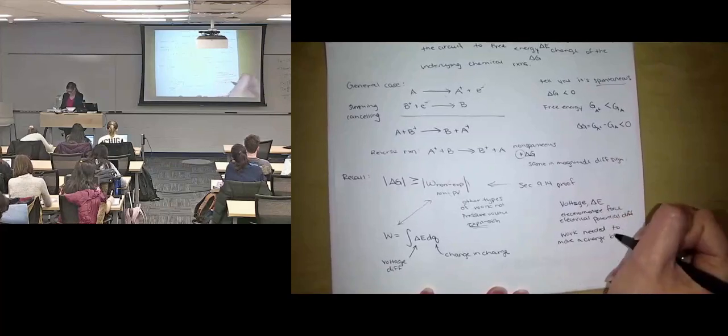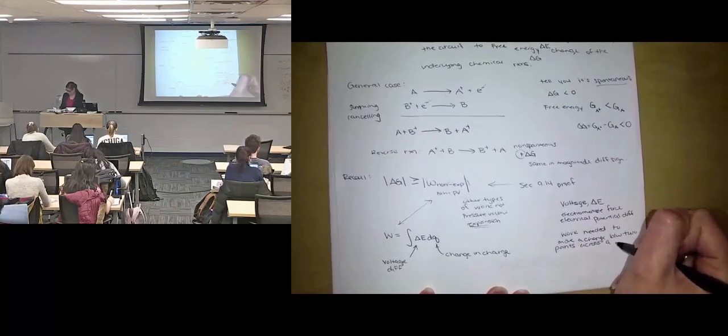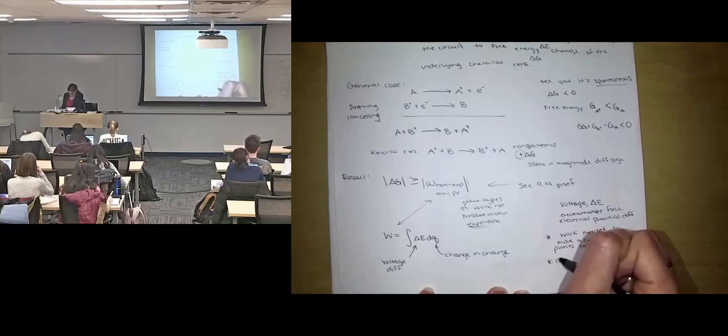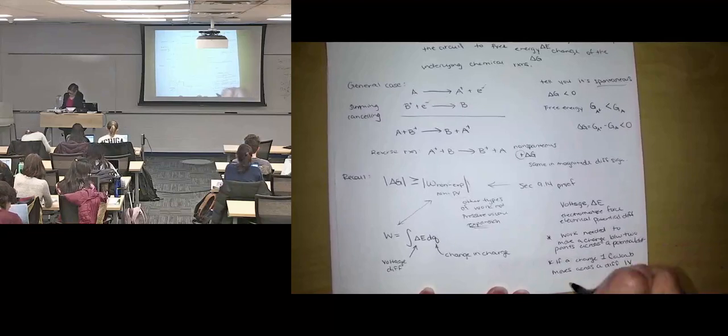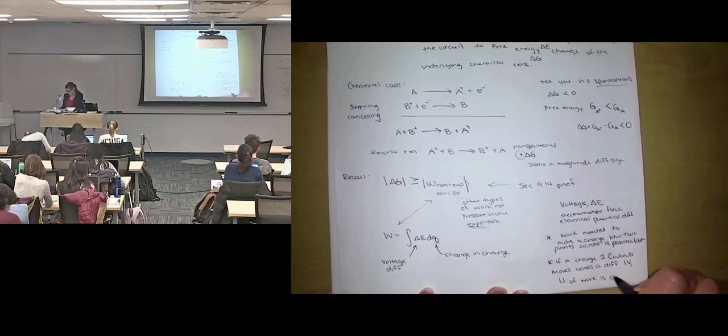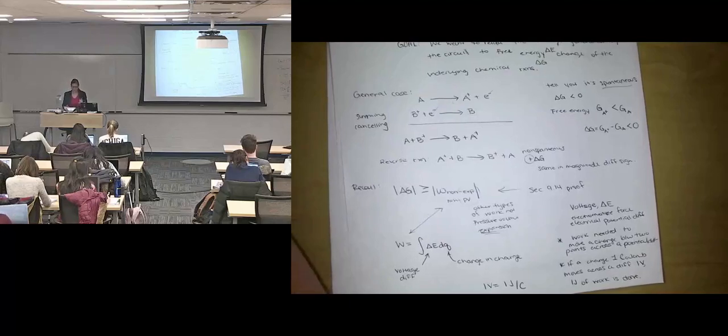It is the work needed to move a charge between two points across a potential difference. Another way to say that same thing is that if a charge of one coulomb moves across a difference of one volt, one joule of work is done. So those are all definitions that we actually saw before.